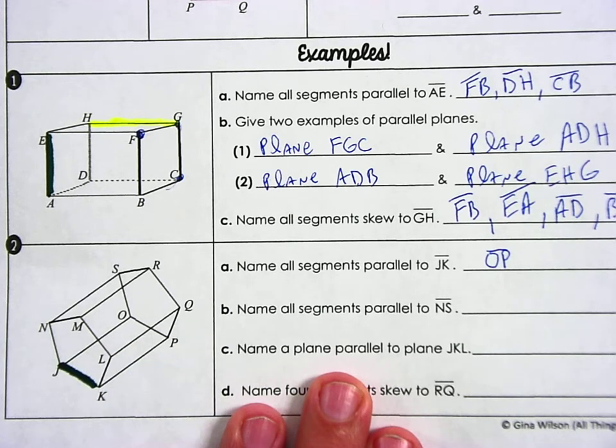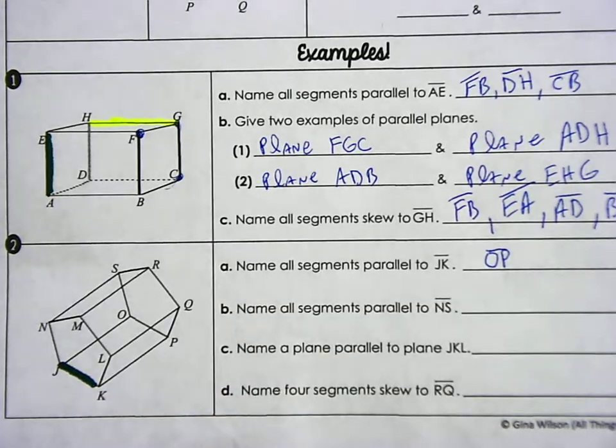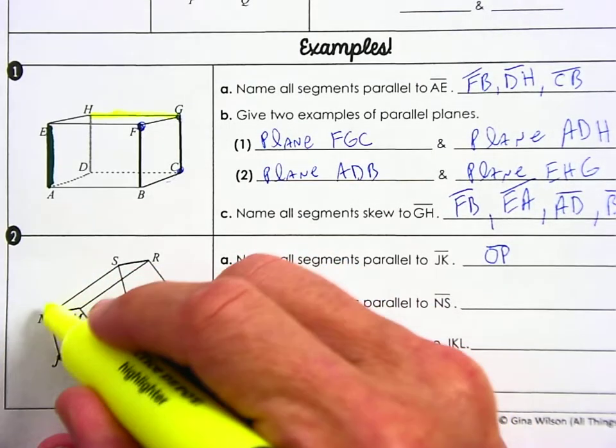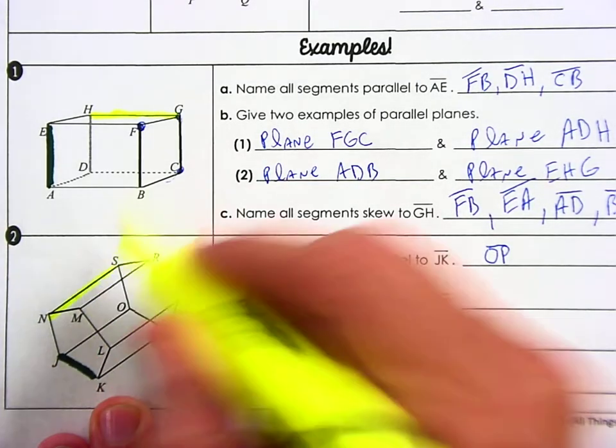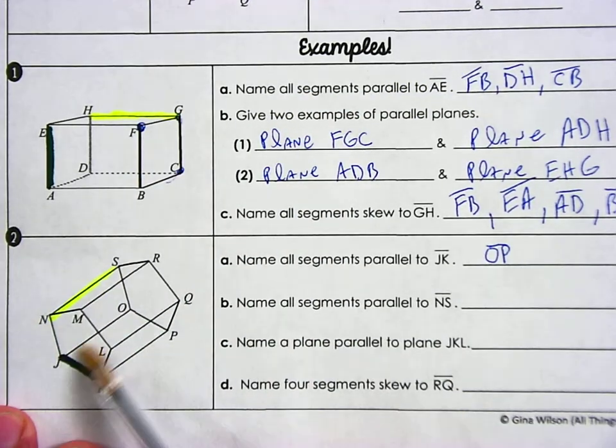Yeah, because I see these are crooked over here. All right, part B, name all segments parallel to NS. All right, where are you NS? So NS, I'll use the highlighter. Okay, NS is right here. All right, call one out. Ooh, someone said JO. JO is definitely parallel.